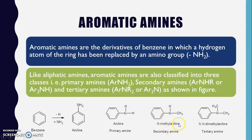We can convert secondary amines into tertiary amines by replacing the other hydrogen atom present on the nitrogen atom, giving N,N-dimethyl aniline as an example of a tertiary amine. In tertiary amines, no hydrogen is present on nitrogen, and both hydrogen atoms can be replaced either with alkyl or aryl groups, or one may be alkyl and one aryl. So like aliphatic amines, aromatic amines are classified into three classes: primary, secondary, and tertiary aromatic amines.